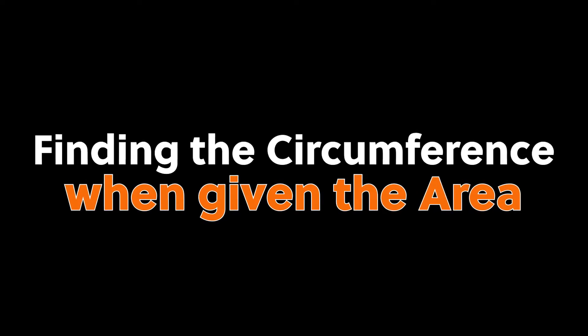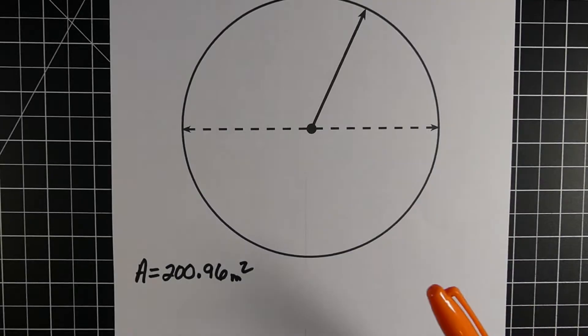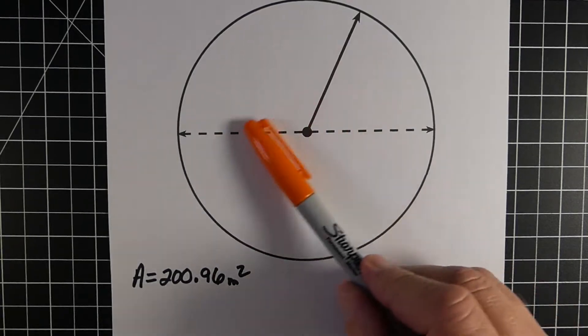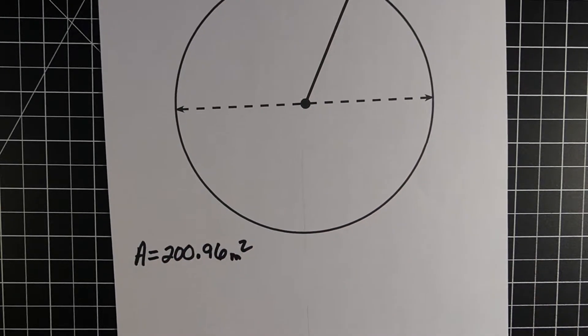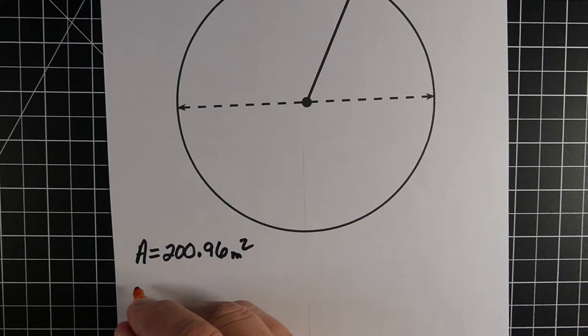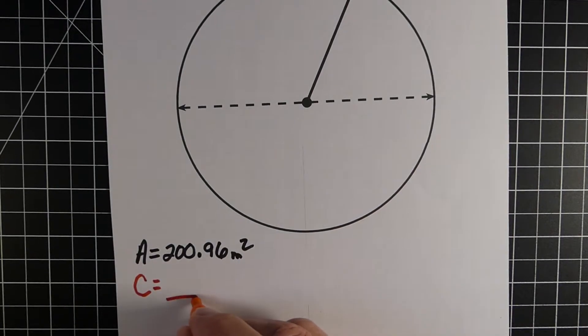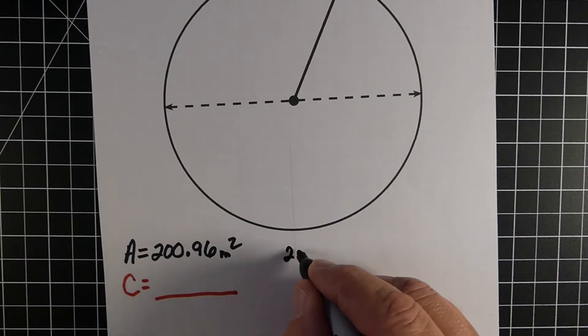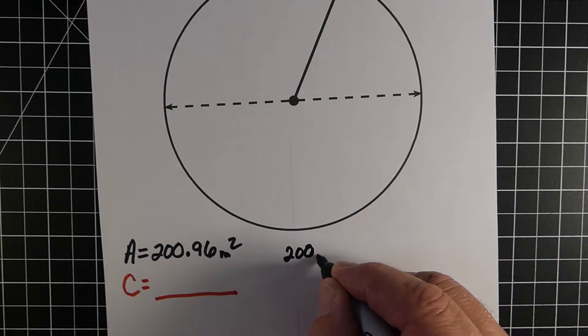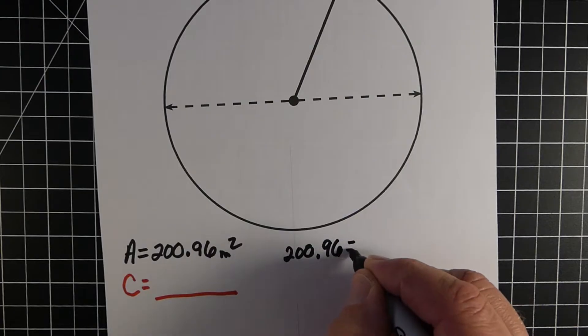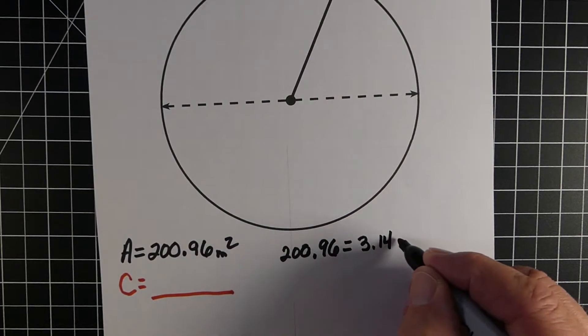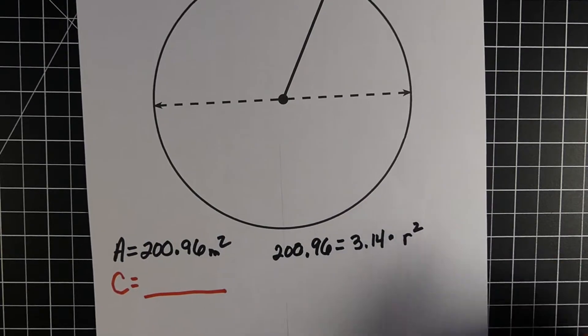Let's look at how we can take the area of a circle and use that information to help us find the circumference. We have three examples, so let's jump into example number one. In this problem, we know the area of this circle is 200.96 meters squared. We need to get enough information from this to help us find the circumference. We know our formula to find area is pi times the radius squared, so the area is 200.96, pi is 3.14, and we need to find the radius squared.